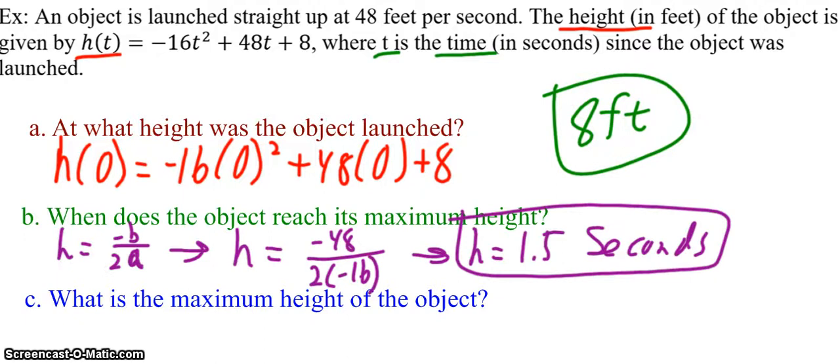Okay, so I know the h-value of the vertex is opposite of b over 2a. And in this case, that's negative 48 over 2 times negative 16. If I type that into my calculator, that's 1.5 seconds. So the object will reach its maximum height at 1.5 seconds.